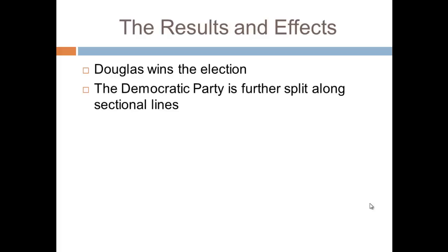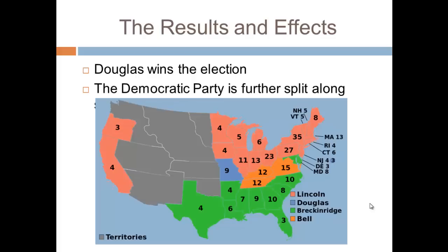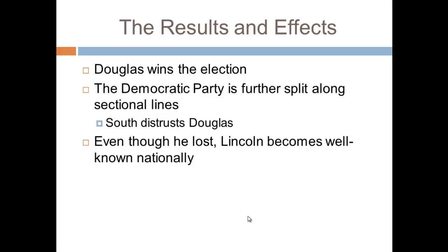What are the results and effects of these debates? Douglas wins the election in 1858, and the Democratic Party is further split along sectional lines. The South, from this moment forward, will not trust Douglas at all. Looking ahead to the 1860 presidential map, Douglas does not win a single southern state except Missouri, which is a border state — the deep southern states chose Democrat John C. Breckinridge instead. Even though Lincoln lost the Senate race, he became well-known nationally, becoming an overnight sensation and a frontrunner for the 1860 Republican nomination, which he ultimately did win.